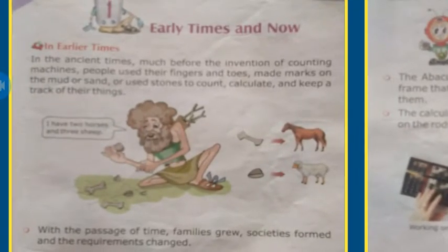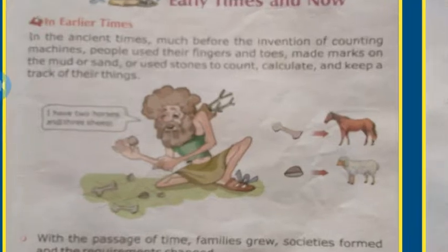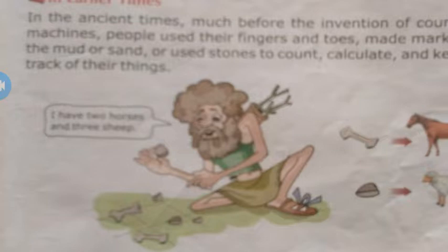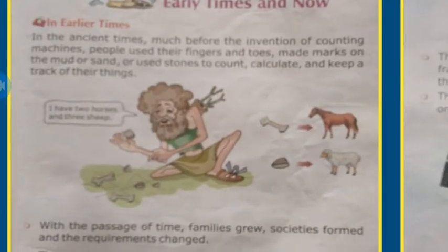Students, in the ancient times, much before the invention of counting machines, people used their fingers and tools, made marks on the mud or sand, or used stones to count, calculate and keep track of their things. You can see one early man there — he is saying, I have two horses and three sheep. With the help of a small piece of bone, he is identifying how many animals he had.